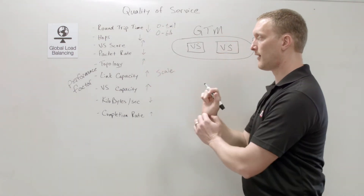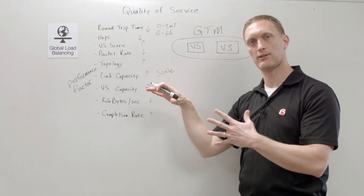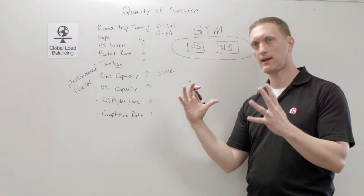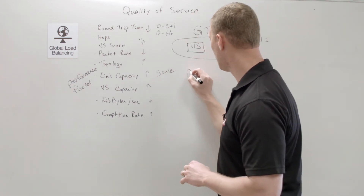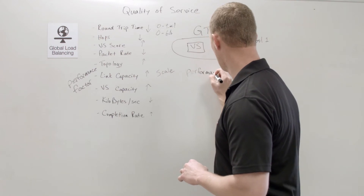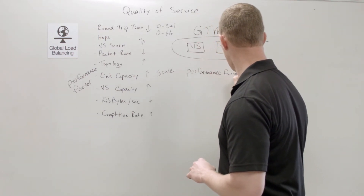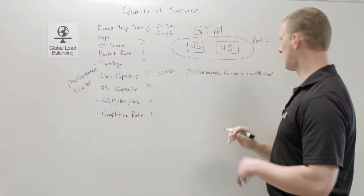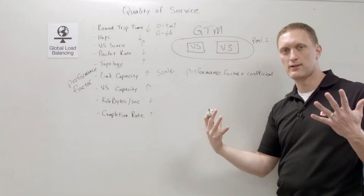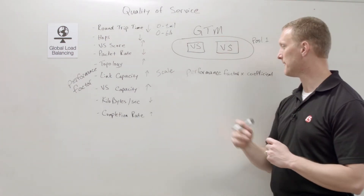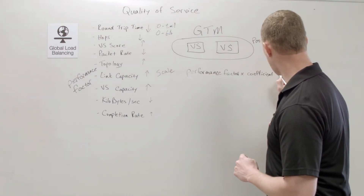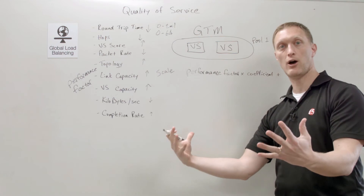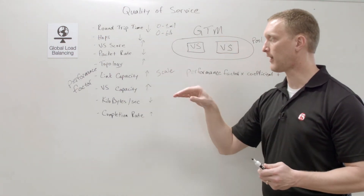Now we need to figure out what the GTM does with all of this to determine which virtual server to select. Essentially it runs through an equation: performance factor times coefficient — and it goes through all of the performance factors, each multiplied by its coefficient, and adds them together until it comes up with an overall value.